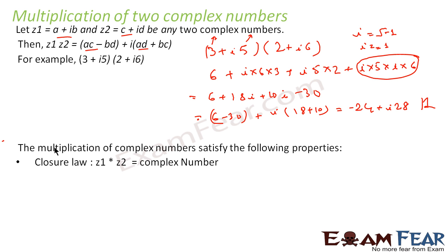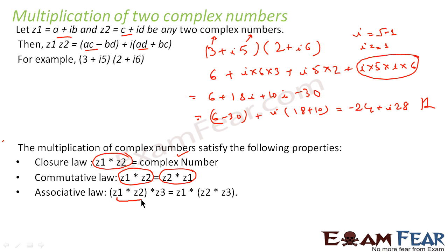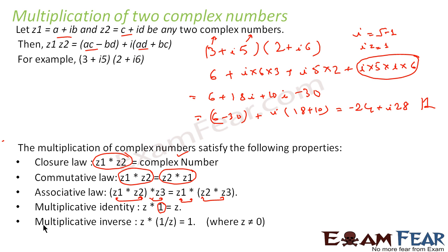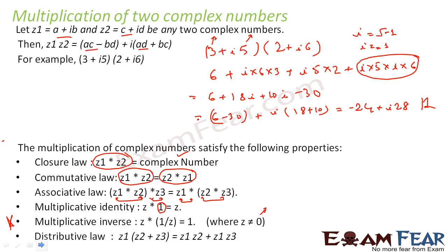Multiplication of complex numbers satisfies: closure law — the product is a complex number; commutative law — z1 times z2 equals z2 times z1; associative law; multiplicative identity — multiplying by 1 gives the same number; multiplicative inverse — for every nonzero z there exists 1/z such that z times (1/z) equals 1; and distributive law — z1(z2 plus z3) equals z1·z2 plus z1·z3.